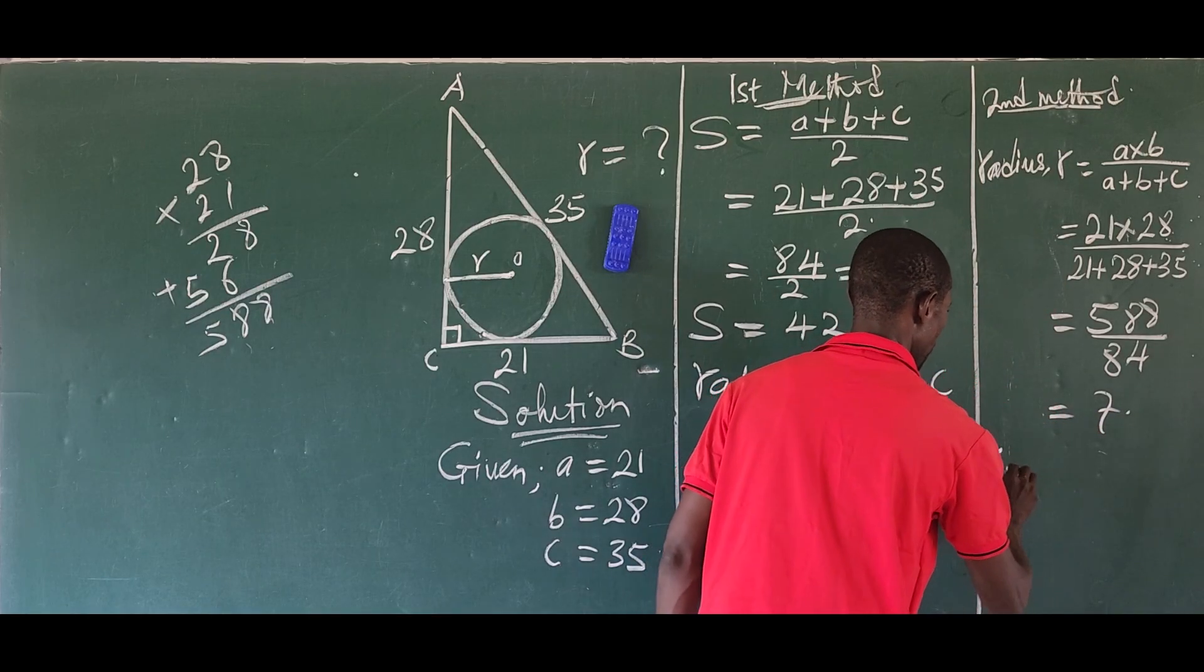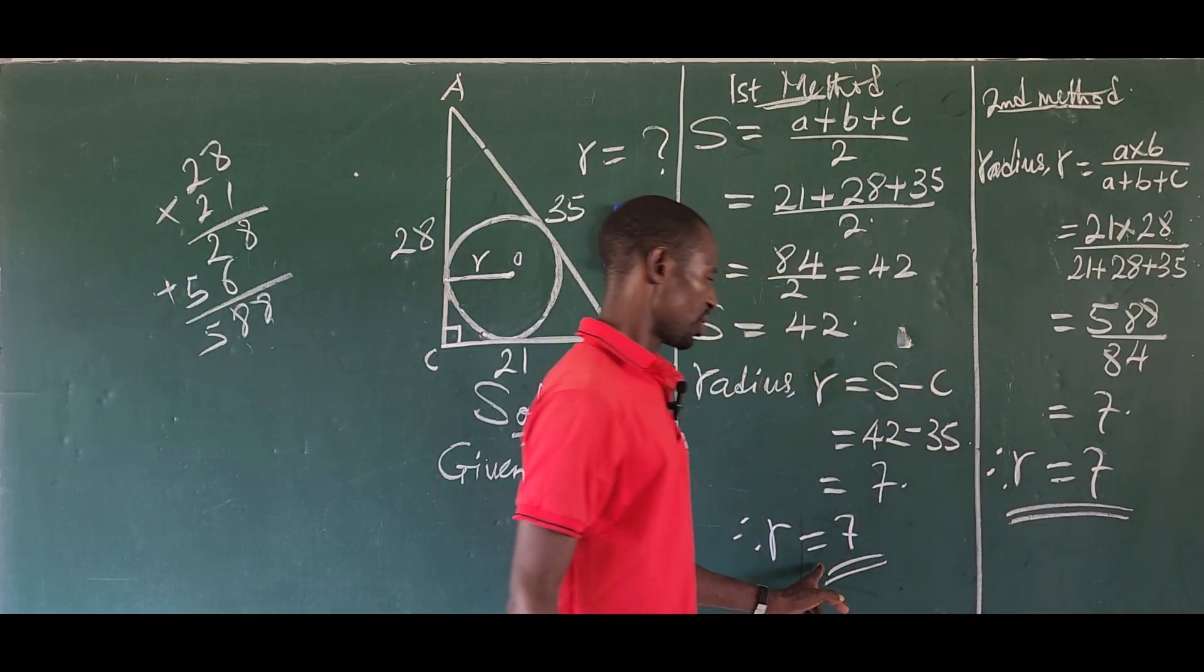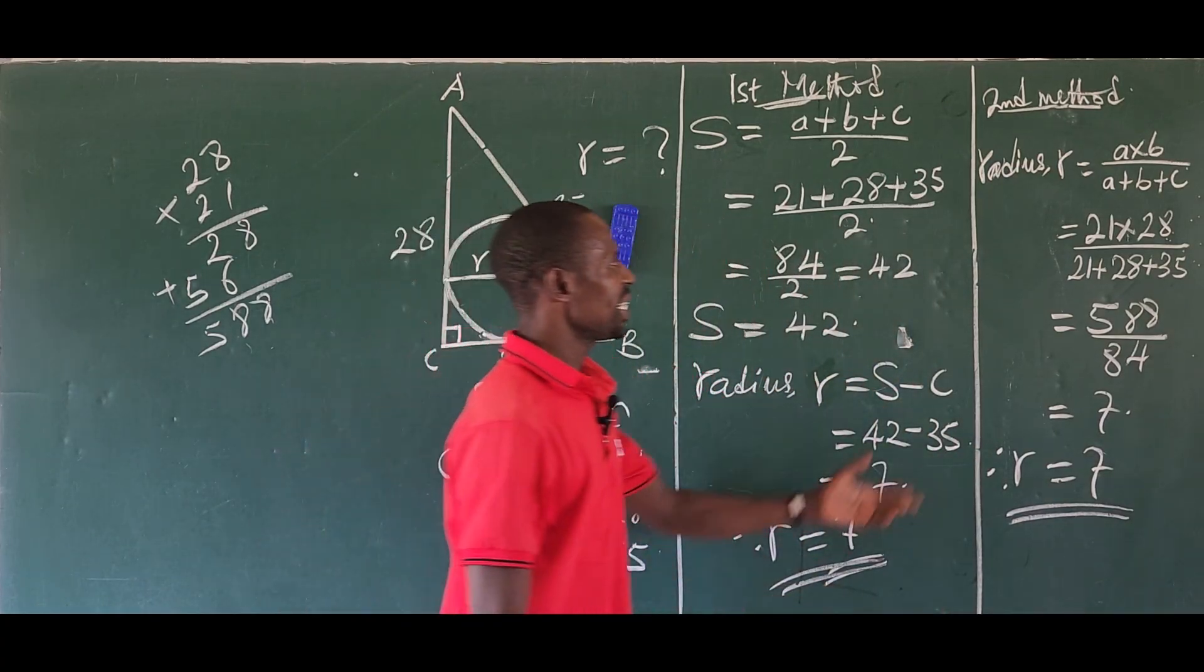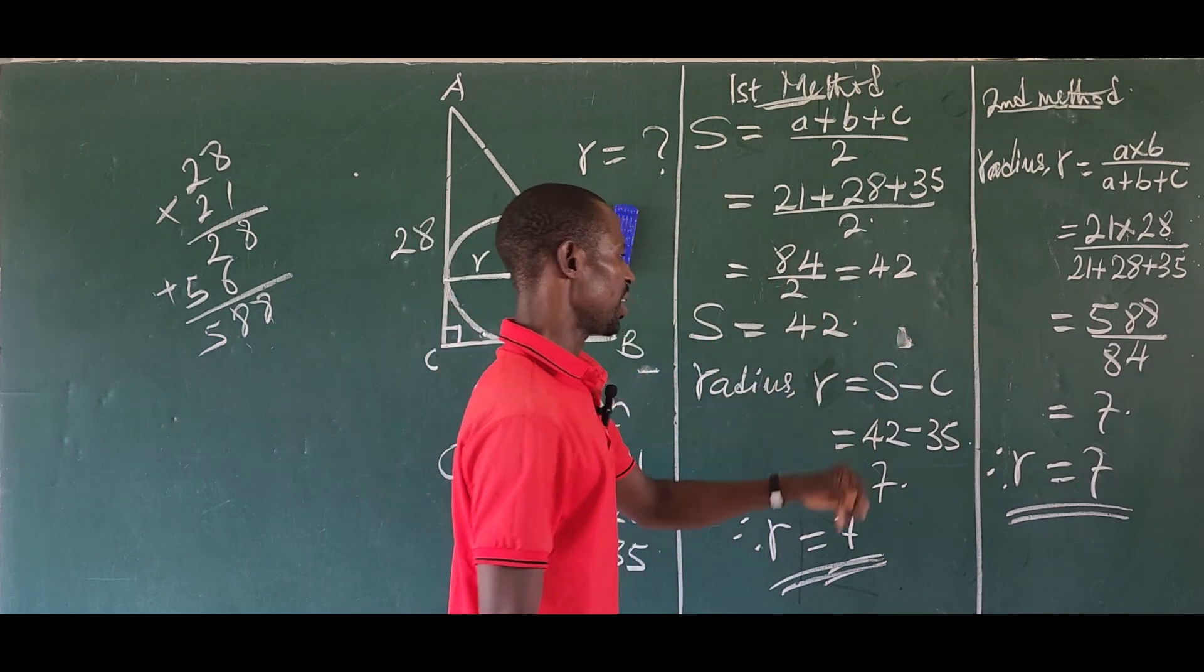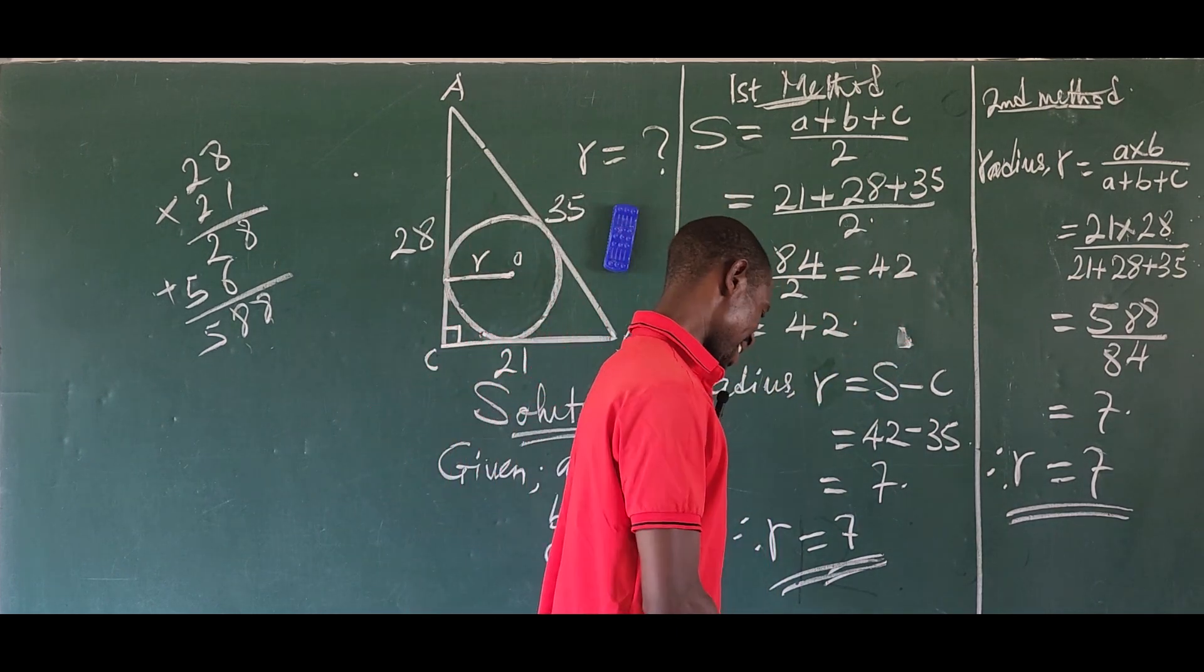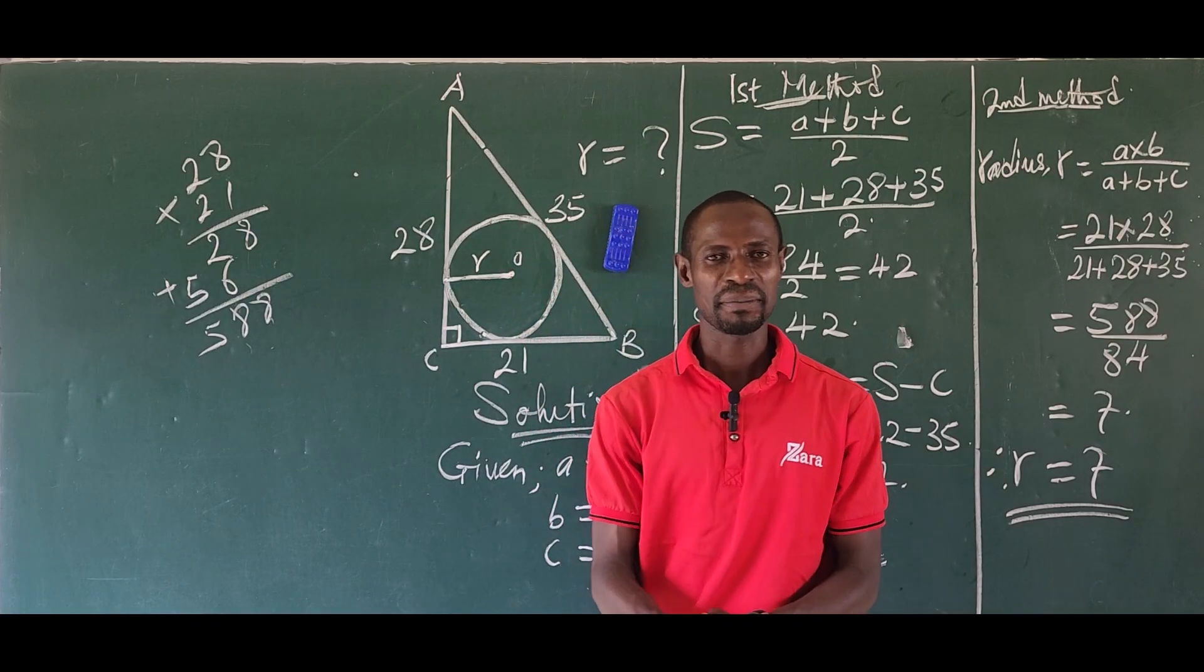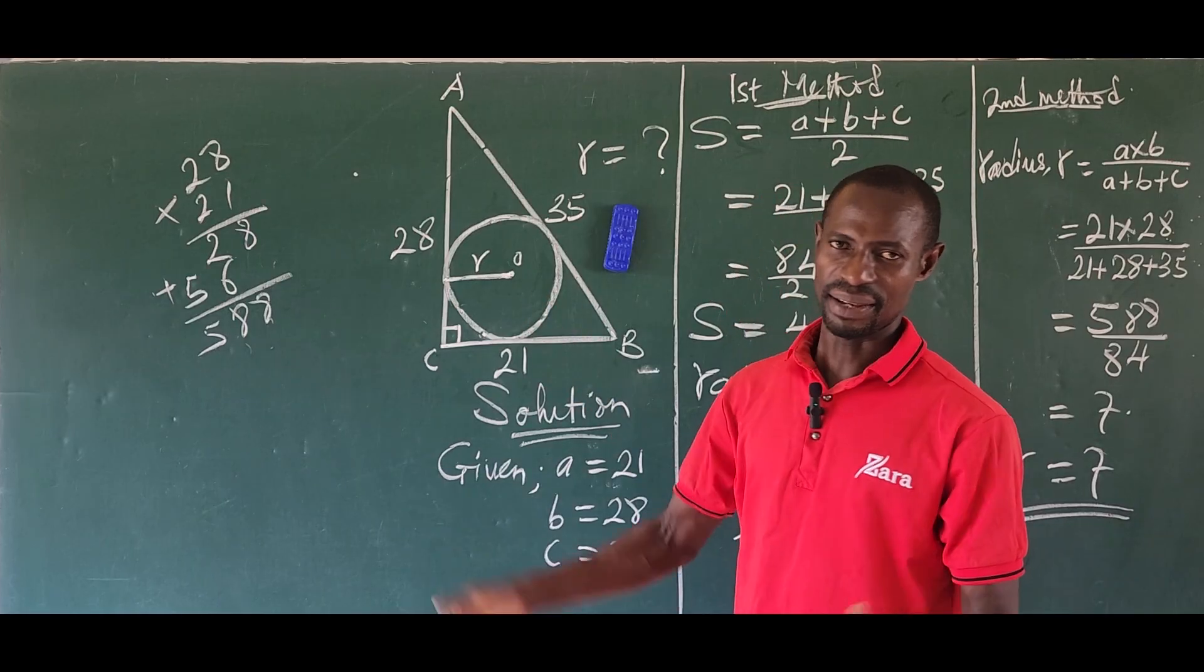If you divide this out, it's going to give you 7. Therefore, our r equals 7, the same result. Look at what we got in the first method, we also got 7. So either you use this method or that method, you get the same answer. This brings us to the end of this math class. The radius of this circle is 7.